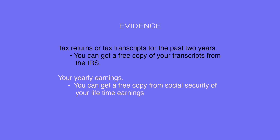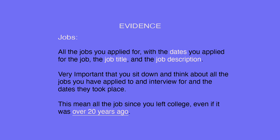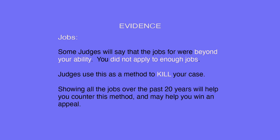You will also need your yearly earnings — you can get a free copy from Social Security of your lifetime earnings. For jobs, document all the jobs you applied for with the dates you applied, the job title, and the job description. It is very important that you think about all the jobs you have applied to and interviewed for and the dates they took place — this means all jobs since you left college, even if it was over 20 years ago. Some judges will say the jobs were beyond your ability or that you did not apply to enough jobs. Judges use this as a method to kill your case. Showing all jobs over the past 20 years will help you counter this method and may help you win an appeal.